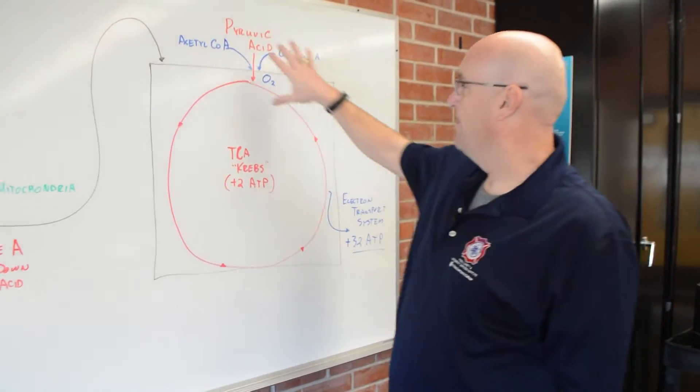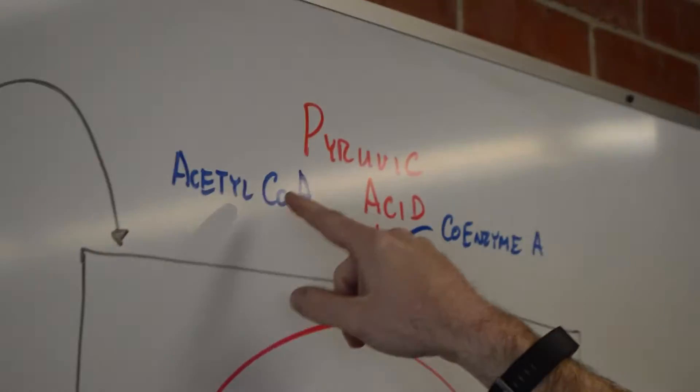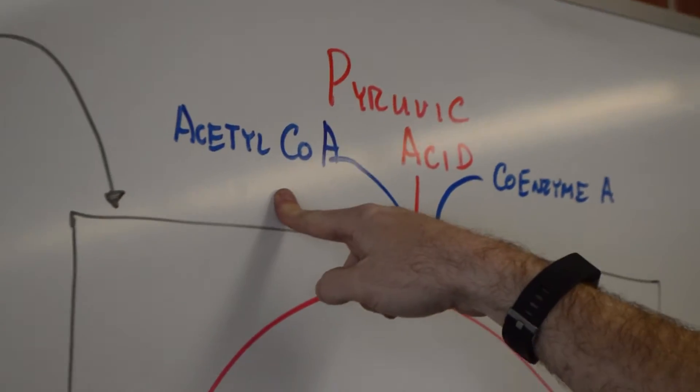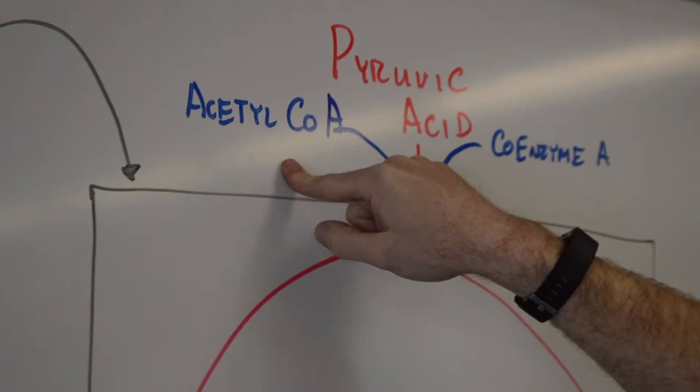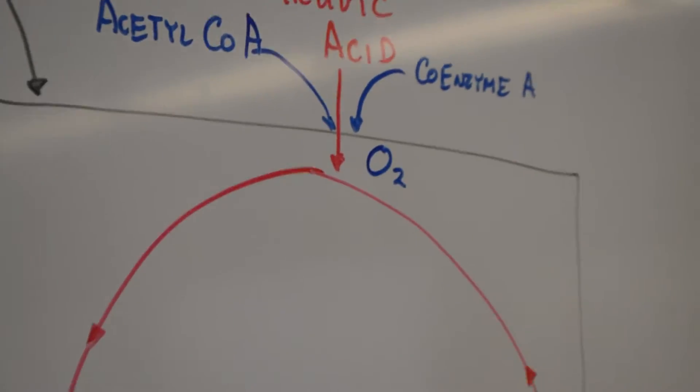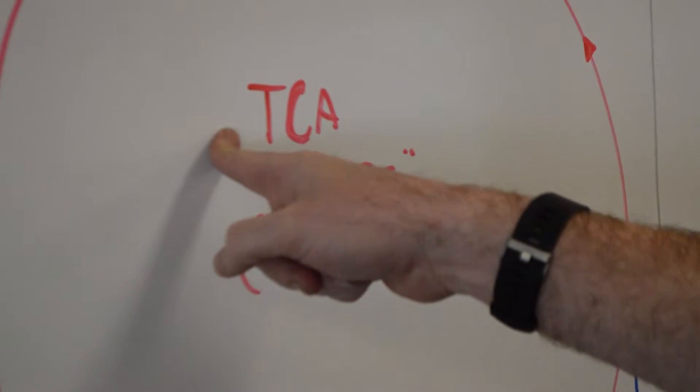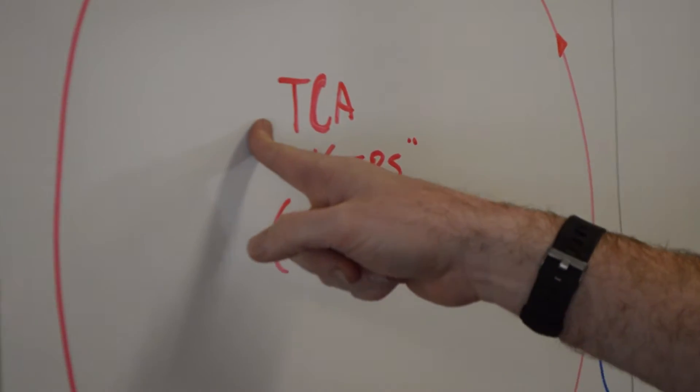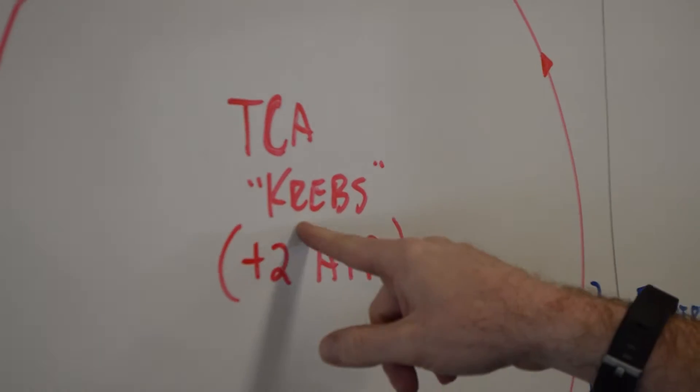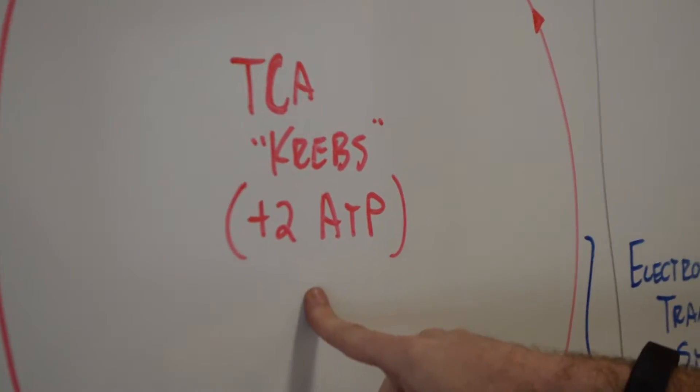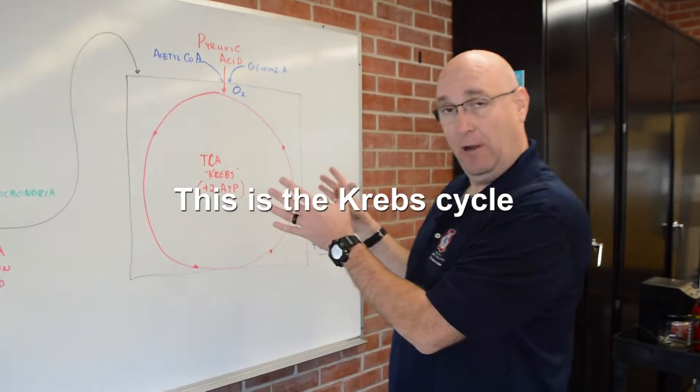So along with coenzyme A, we have another coenzyme that helps break down pyruvic acid and starts this whole cycle, this TCA, or the tricarboxylic acid cycle, or the citric acid cycle, or also known as the Krebs cycle. It doesn't matter. This is the Krebs cycle.